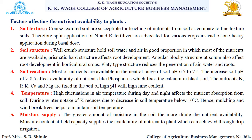The next factor is soil structure. A well crumb structure holds soil water and air in good proportion, in which most nutrients are available. Prismatic hard structure affects root development. If there is an angular blocky structure, that soil structure also affects root development in horticultural crops. Platy type of structure reduces the penetration of air, water, and roots.